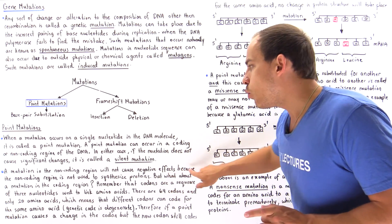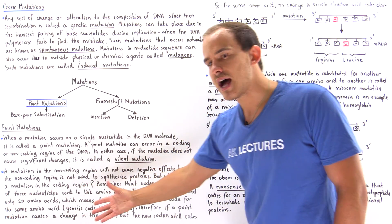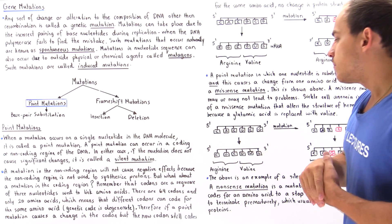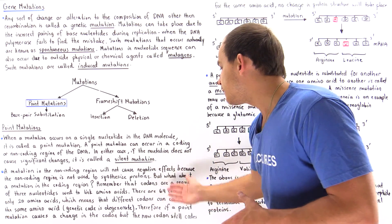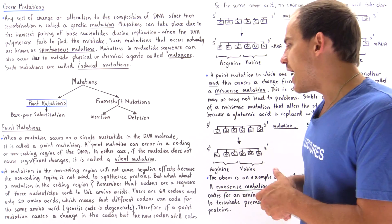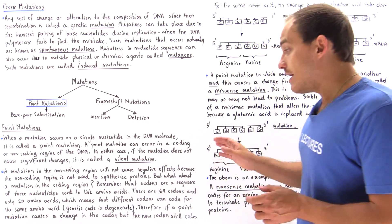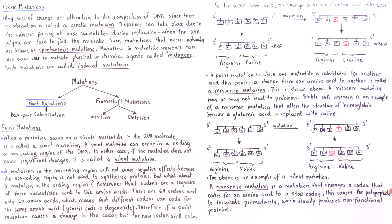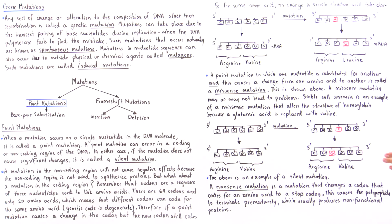To recap: codons are sequences of three nucleotides used to code for amino acids in protein synthesis. There are 64 codons and only 20 amino acids, which means different codons can code for the same exact amino acid — making our genetic code degenerate. Therefore, if a point mutation changes a codon but the new codon still codes for the same amino acid, no change in protein structure will occur because the amino acid sequence remains exactly the same.